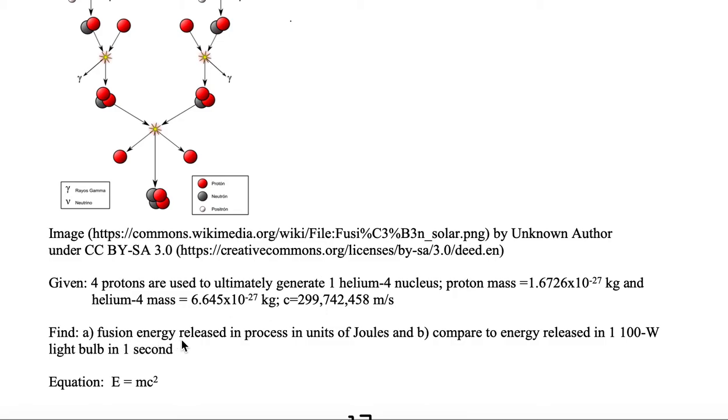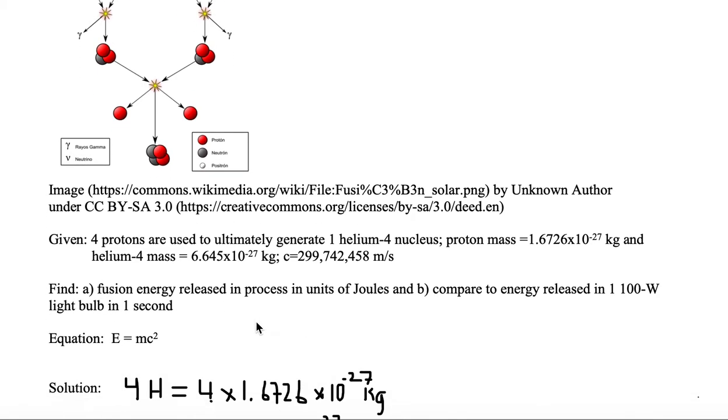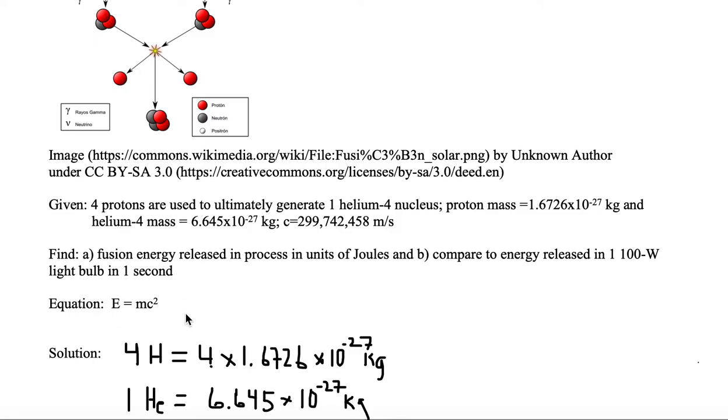We want to find the fusion energy released in process and units of joules and we will then compare the energy to that released in one 100 watt light bulb in one second. So we're going to use the equation of Einstein's famous equation of E equals MC squared.